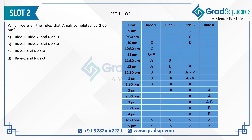Question 2: Which rides did Anjali complete by 2 pm? Anjali completed Ride 1 by 12 pm, Ride 3 by 1 pm, and Ride 2 by 2 pm. At 2 pm she begins Ride 4, so that is not included. The answer is Rides 1, 2, and 3 — Option A.